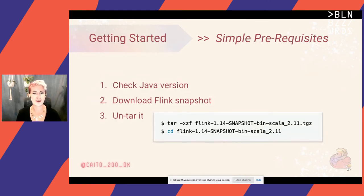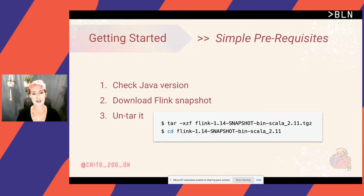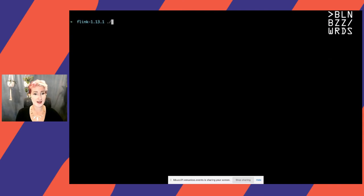Now we can get on to the fun part — the demo. I wanted to keep this as simple as possible, and hopefully you can follow along if you want. The prereqs are extremely simple: you do not need to write any Java code, but you do need to make sure that you have Java 8 or 11 installed on your machine. Then just download the current stable snapshot release of Flink — there's a link in the docs — untar it and CD in there, and that's it. That is all of your prereqs.